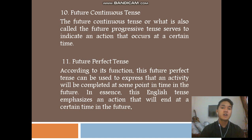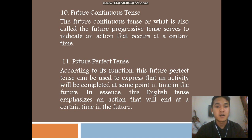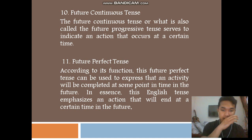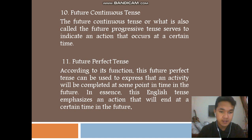Number ten: future continuous tense, also called the future progressive tense, serves to indicate an action that occurs at a certain time. Number eleven: future perfect tense. According to its function, the future perfect tense can be used to express that an activity will be complete at some point in the future. This tense emphasizes an action that will end at a certain time in the future.